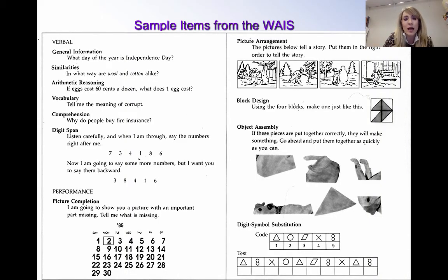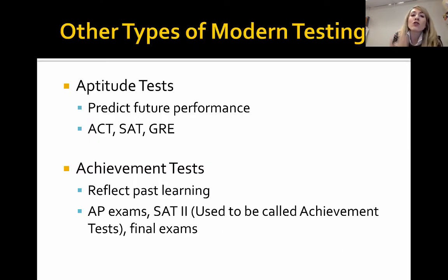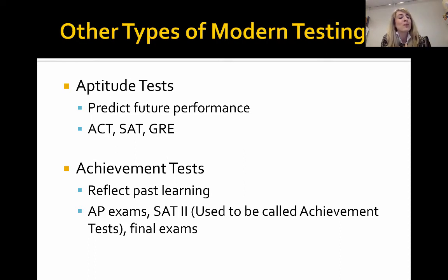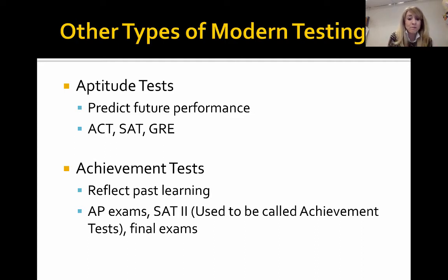There are two other types of modern testing worth knowing. Aptitude tests are designed to measure future performance — many students take aptitude tests to get into college. Achievement tests measure what you currently know based on past learning; the AP exam in May and final exams are examples of achievement tests. Both types are very common today depending on what is being measured.